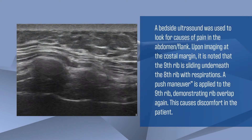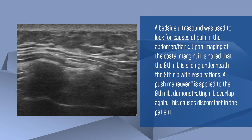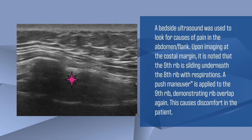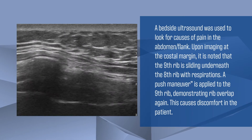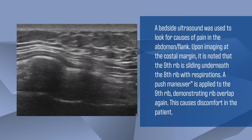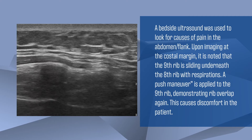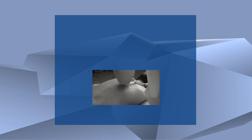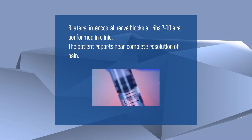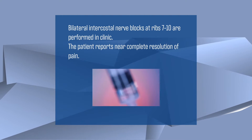A bedside ultrasound was used to look for causes of pain in the side of the chest and abdomen. Upon imaging at the costal margin, it is noted that the 9th rib is sliding underneath the 8th rib with respirations. A push maneuver is applied to the 9th rib, demonstrating rib overlap again, which causes discomfort in the patient. Bilateral intercostal nerve blocks at ribs 7 to 10 are performed in clinic, and the patient reports near complete resolution of pain.